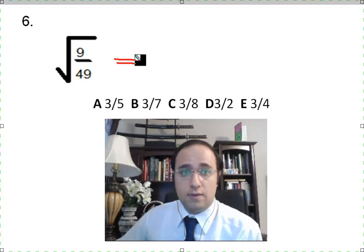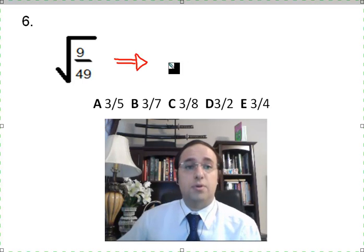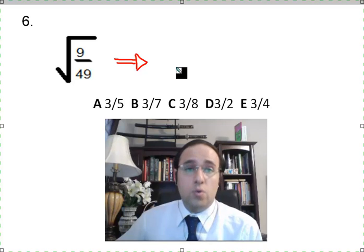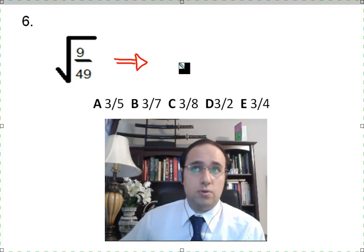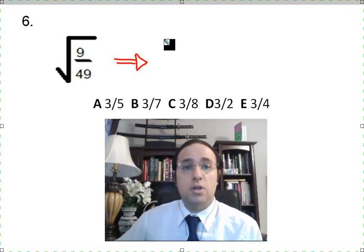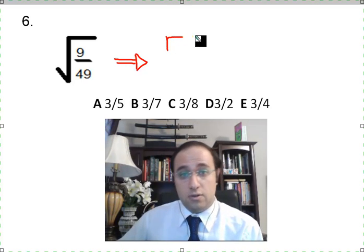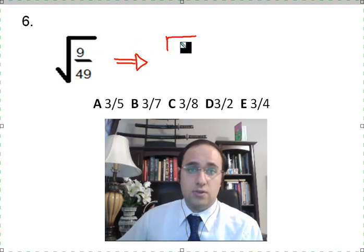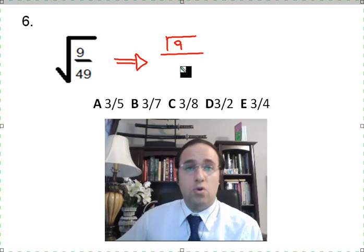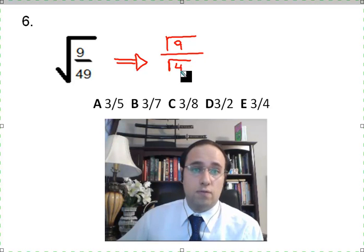And whenever we have a square root or a cubic root or anything similar of a fraction, we can simply rename this root of the fraction and divide it into two parts, one for the numerator and one for the denominator. So the square root of 9 over 49 is the same as saying the square root of 9 over the square root of 49.